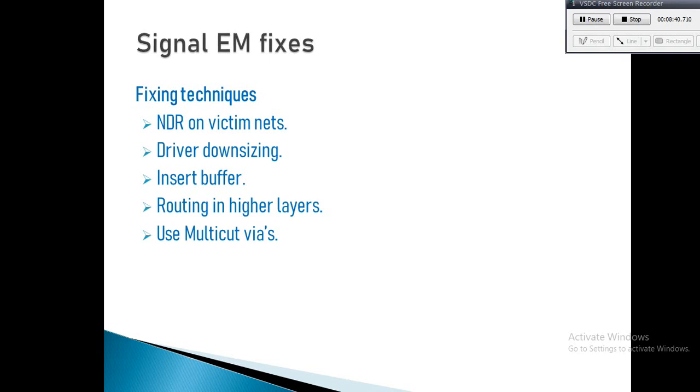NDR on victim nets: applying NDR will increase metal width, which increases current carrying capability. The safest way is to apply NDR on the whole net, but if the design is too congested, applying NDR on the whole net may result in high number of shorts or detouring which affects timing. Alternatively, you can apply NDR on only those segments or layers of the net which have high IRMS current.